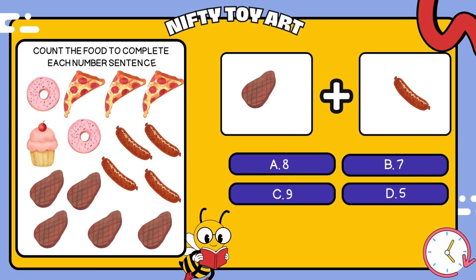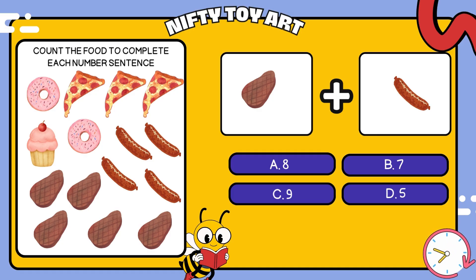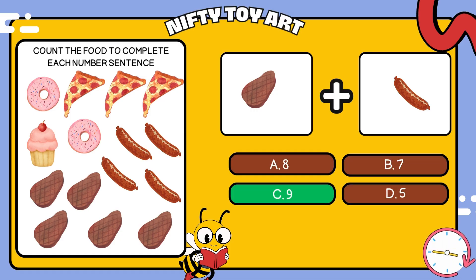We have steaks and sausages. How many foods is that in total? That's right, nine.